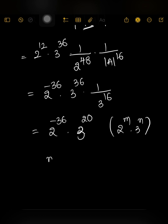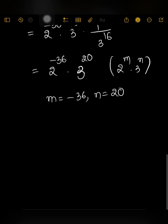Comparing with 2^m · 3^n, we get m = -36 and n = 20. Therefore m + 2n = -36 + 40 = 4.